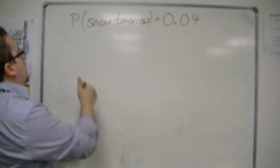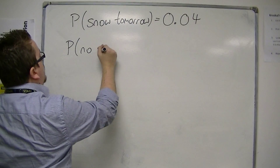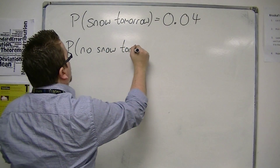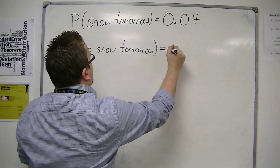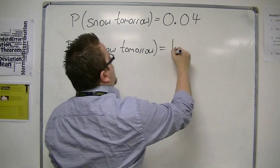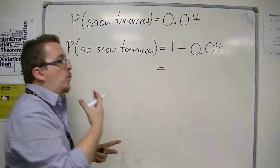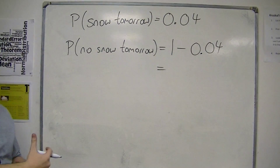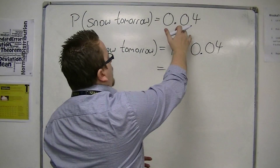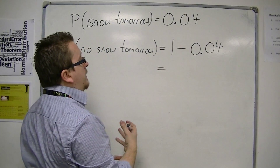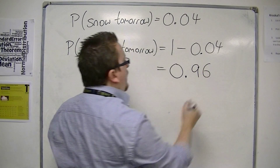Well, the probability of no snow tomorrow will be 1 take away 0.04. So it is always 1 take away the probability of an event not happening — 1 take away that probability. And so in this case it would be 0.96.